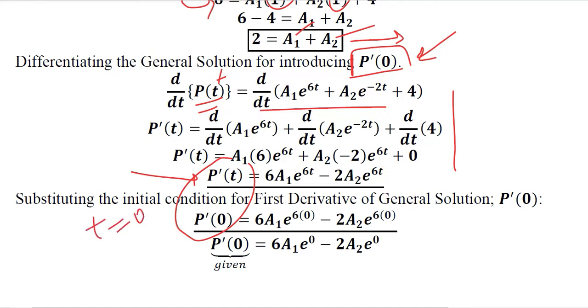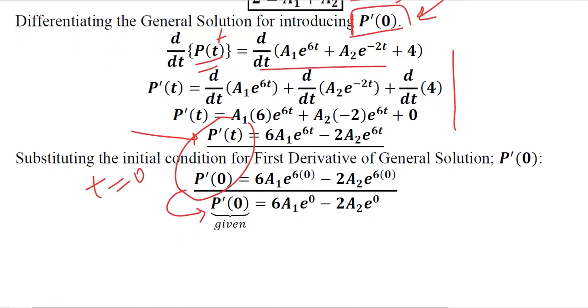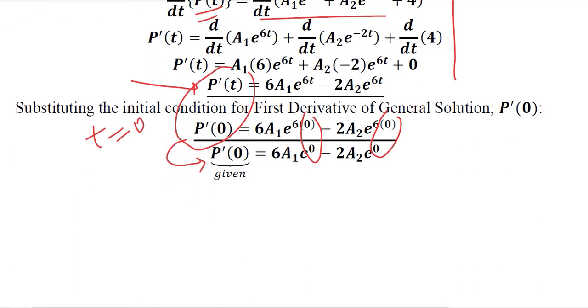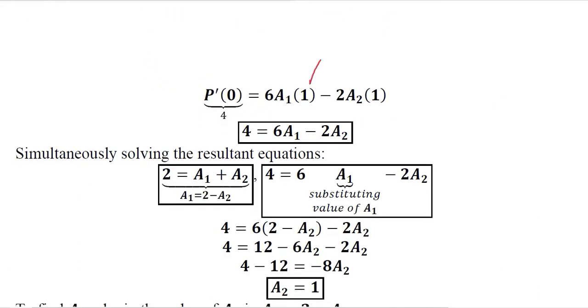When we did this we have this P bar 0 which is given in the equation, in the question, where t is substituted equal to 0 and its effects will be seen that these terms will become 1 because the power is now 0. As we talked about P bar 0, this value is given which is 4. So now we have an equation in terms of A1 and A2.